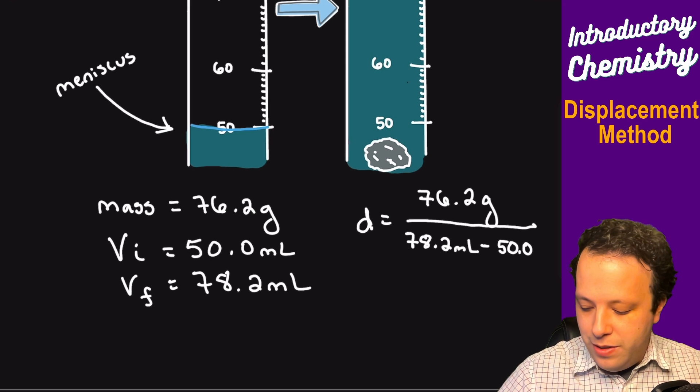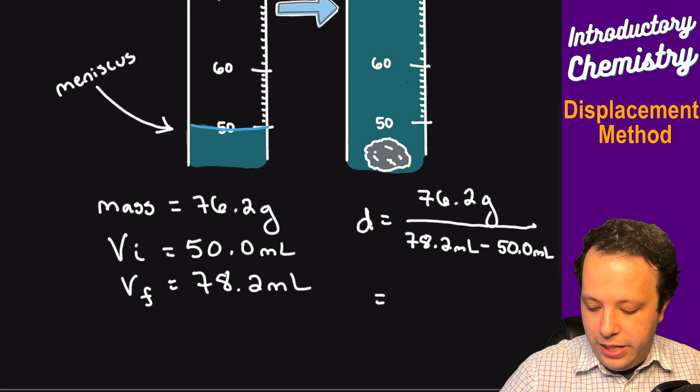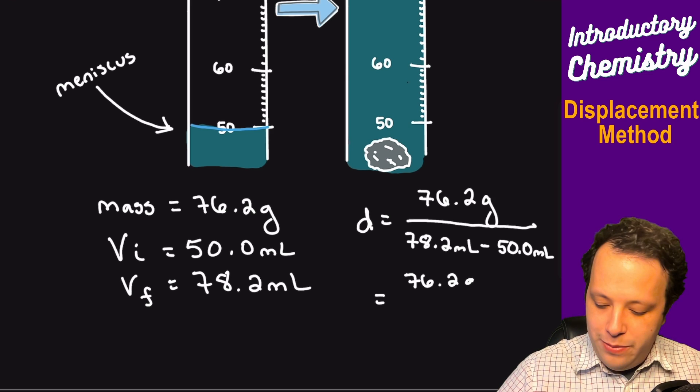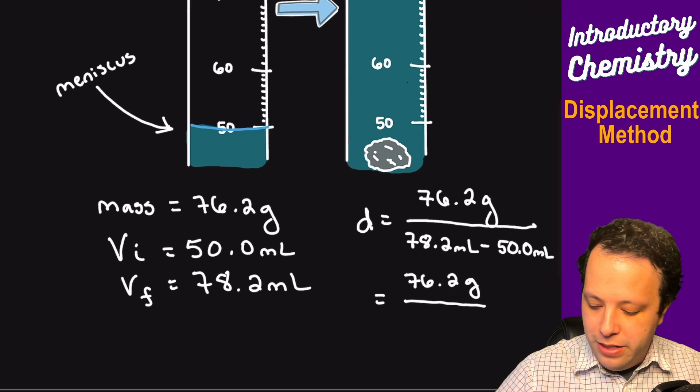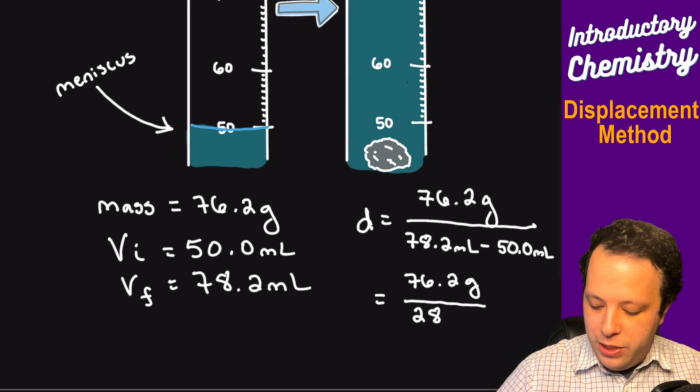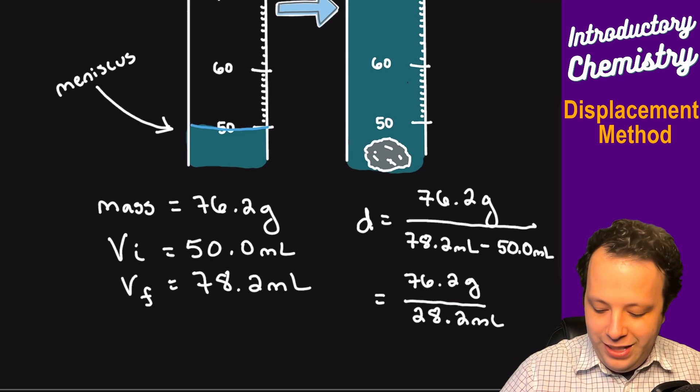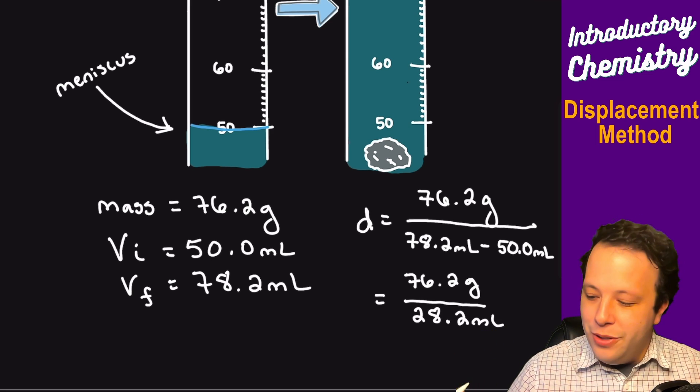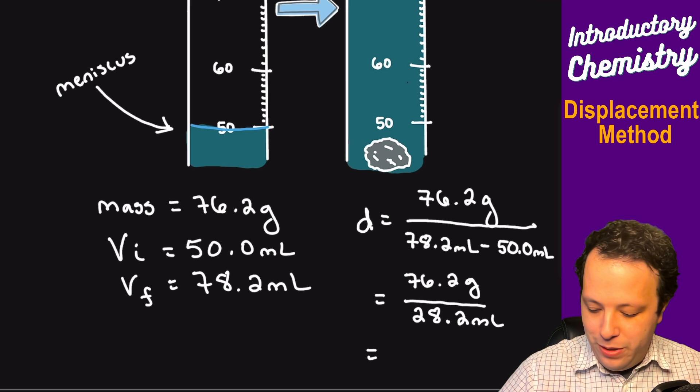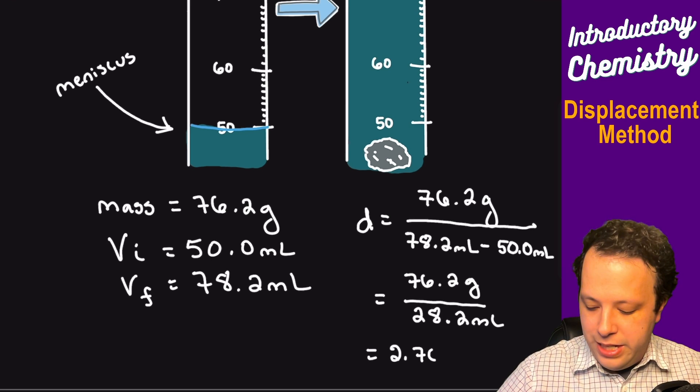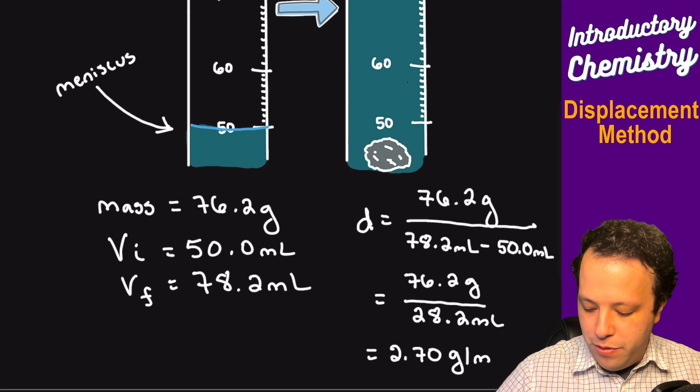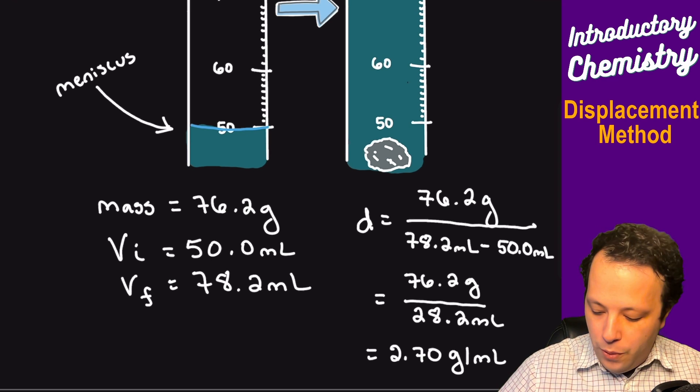So when we do that we will simplify this. It'd be 76.2 grams divided by 28.2 milliliters. We will put that into our calculators and we will get 2.70 grams per milliliter, or you could say 2.70 grams per centimeter cubed depending on which unit you prefer.